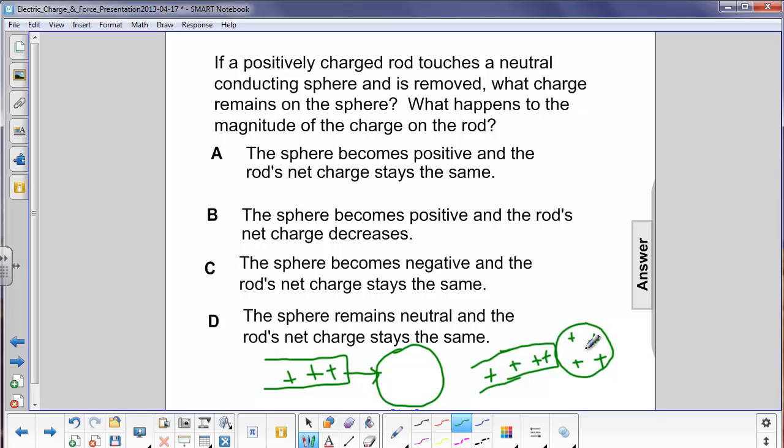What we have is the sphere becoming positive, and the positively charged rod decreases. The net charge on it decreases, so the answer would be B.